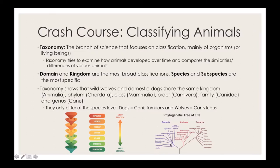There is also breed. When we talk about breeds of dogs, all dogs are the same species, but breed is a more specific way of classifying them. Breed only exists for domesticated animals, whereas species and subspecies exist for both domestic and wildlife.